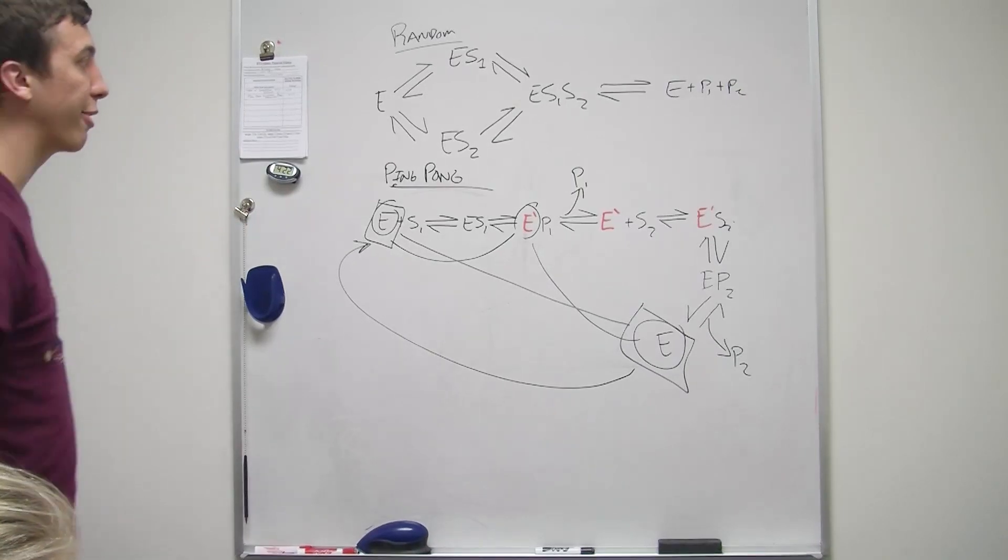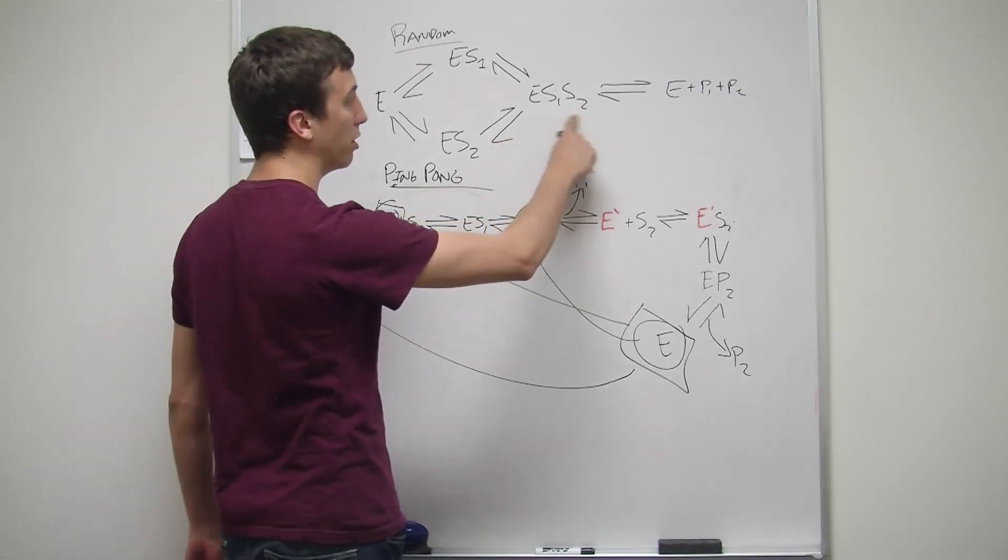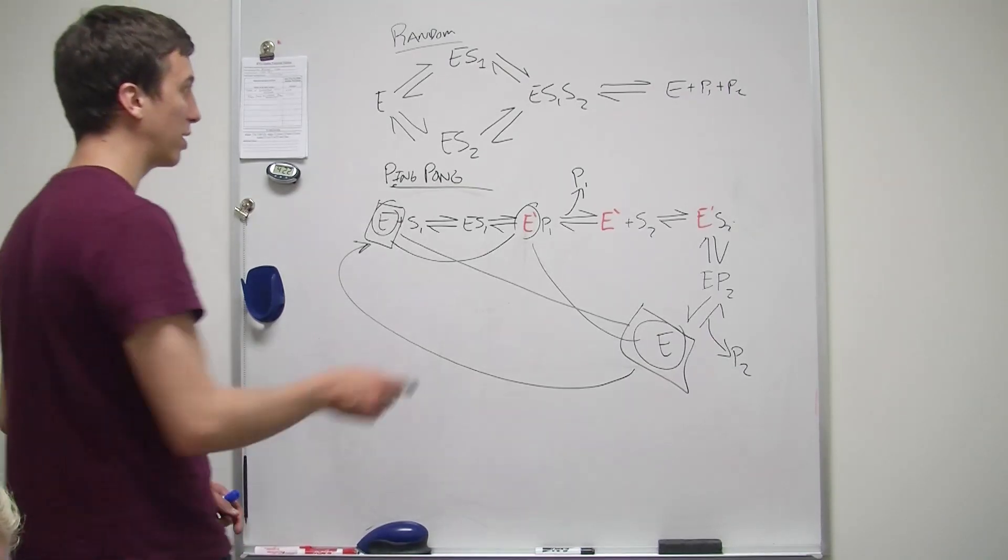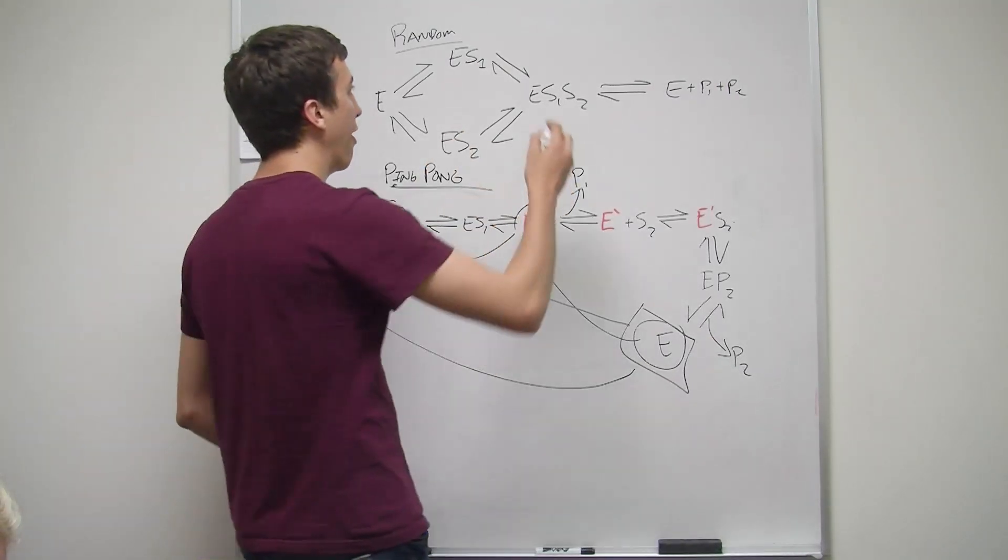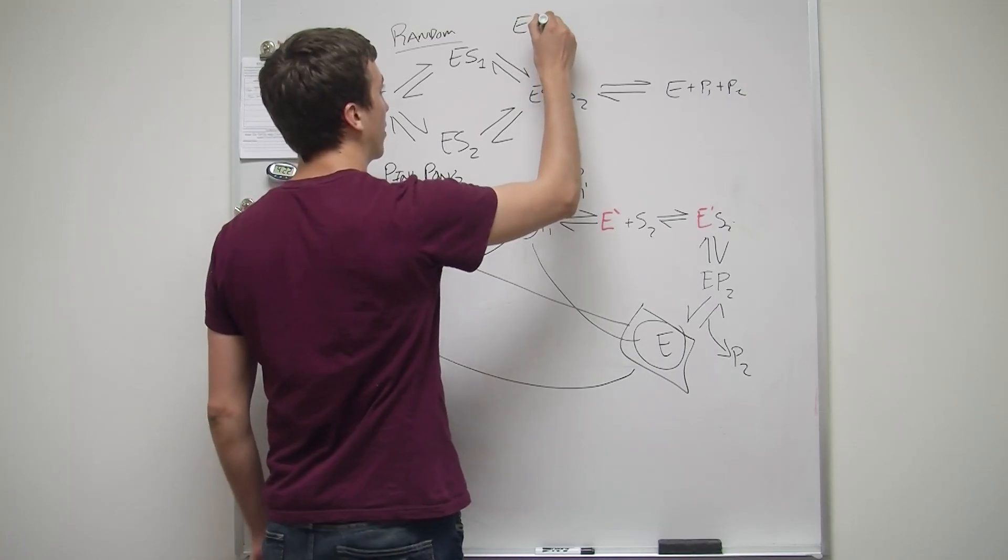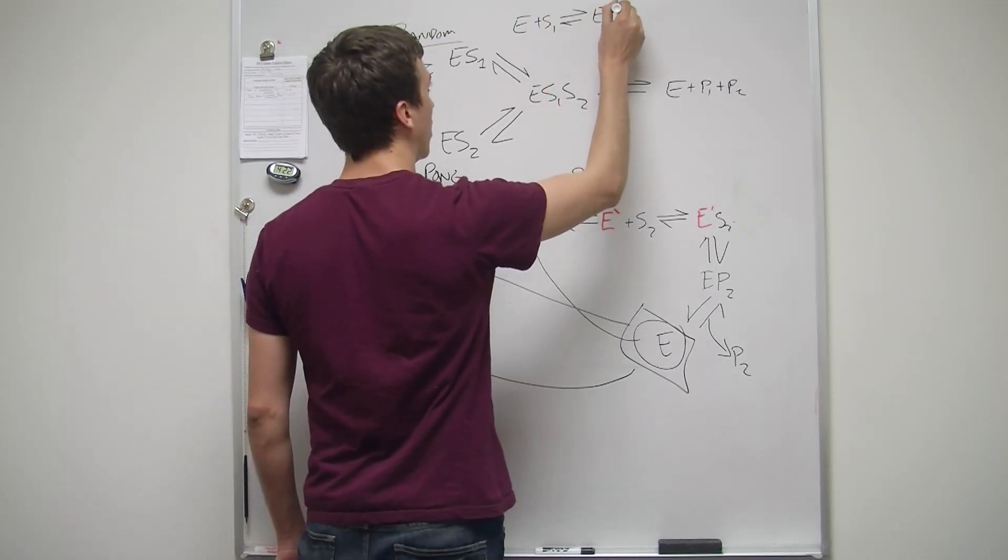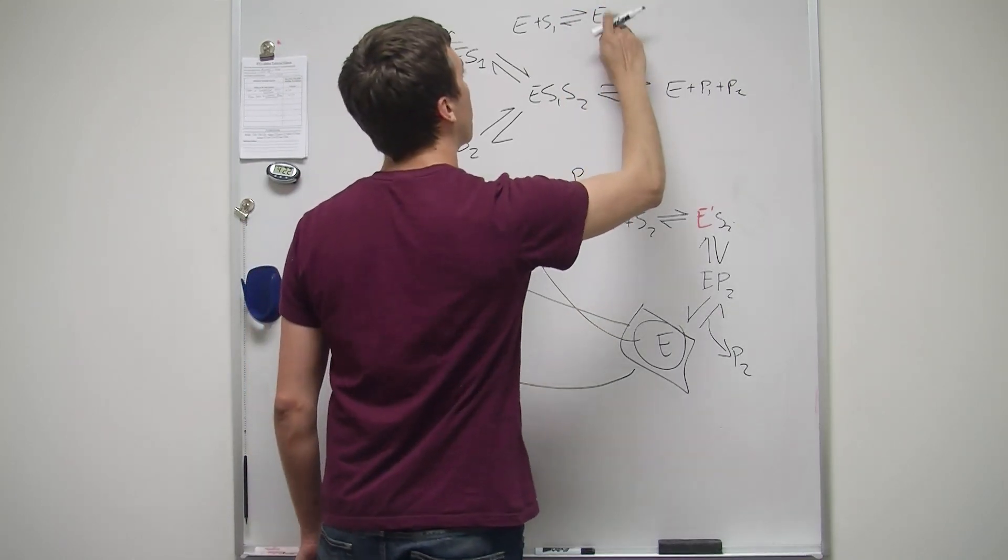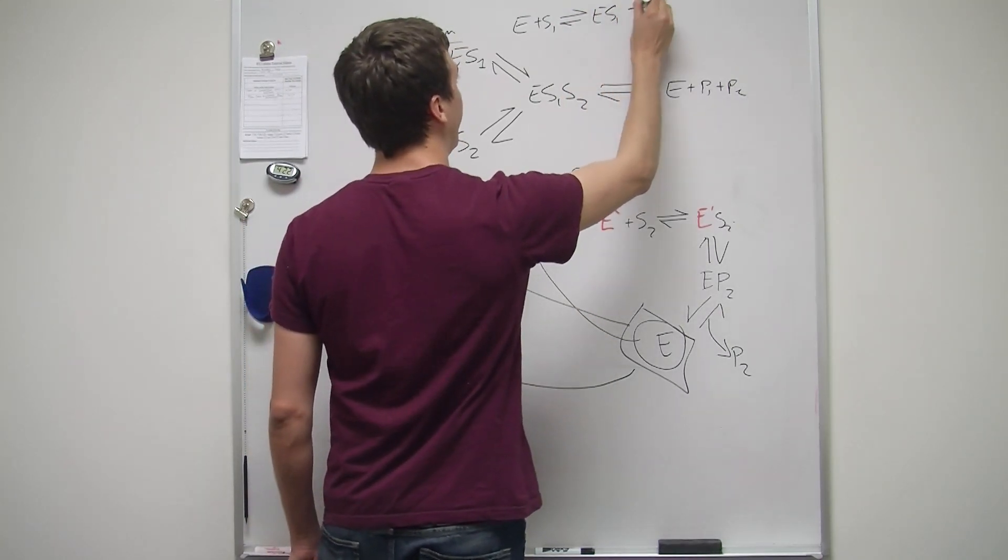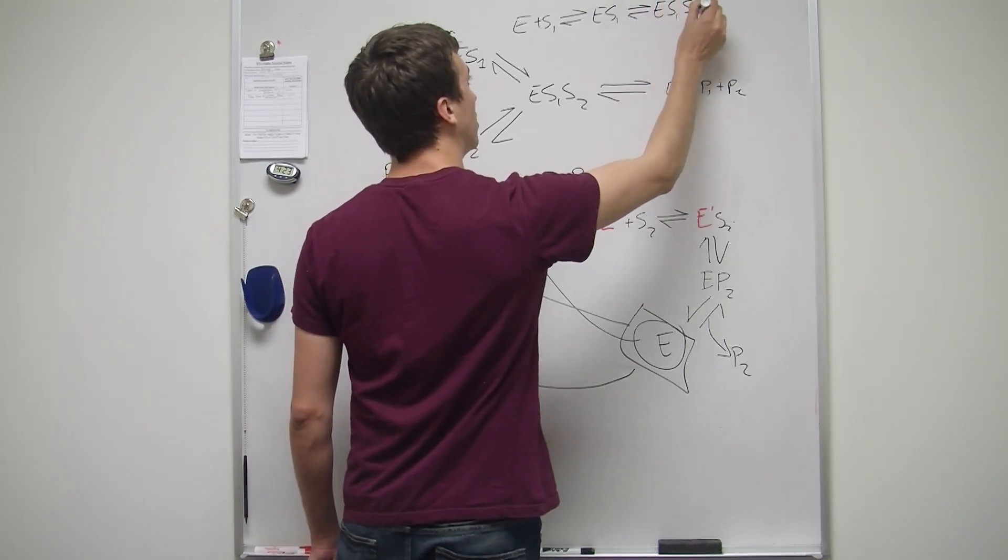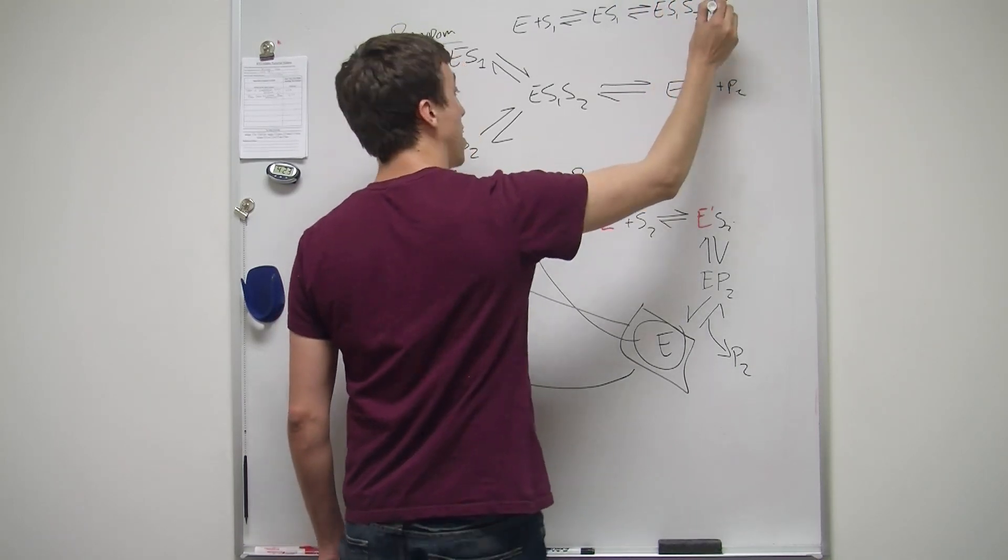So the ternary complex, you got to get them both together before you can make the products. And the ordered version is just a little bit different from this where it involves only after substrate one binds and substrate two binds. Both random order and ordered produce a ternary complex, which is why it produces that graph.